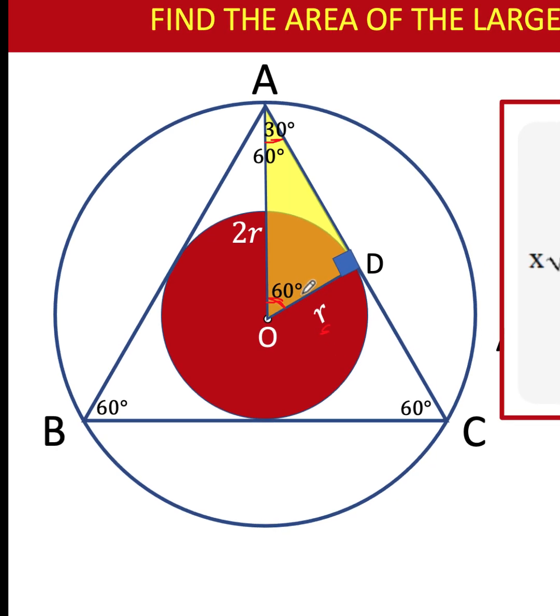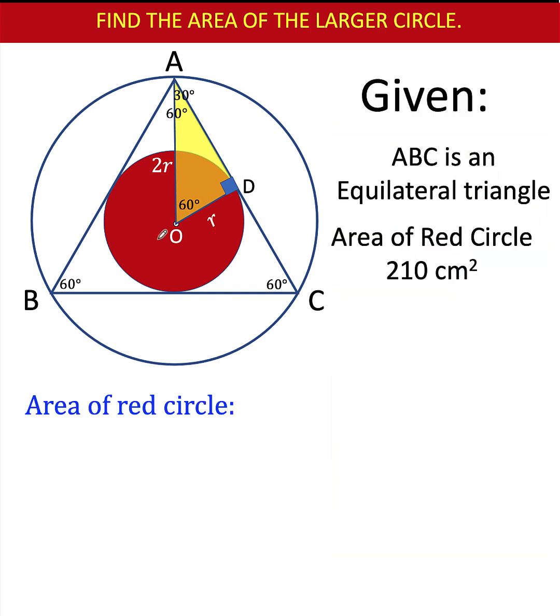Then from here, we can now form this equation. The area of the red circle is, of course, equal to πr², where its radius is represented by the variable r. On the other hand, the area of the larger circle is equal to π times its radius squared, but the radius of the larger circle is now 2r.